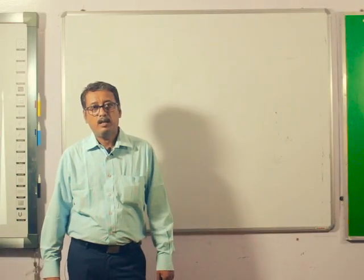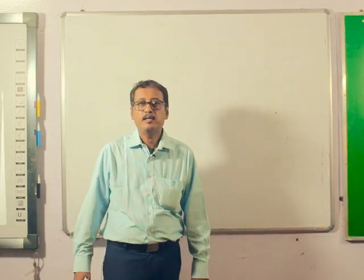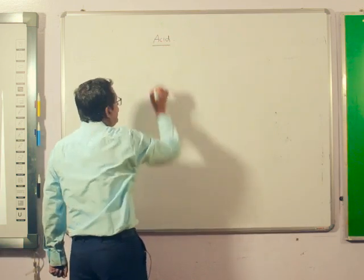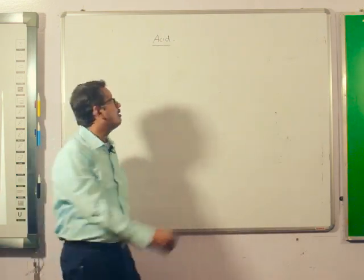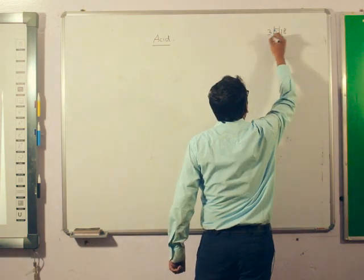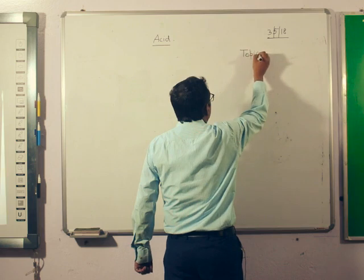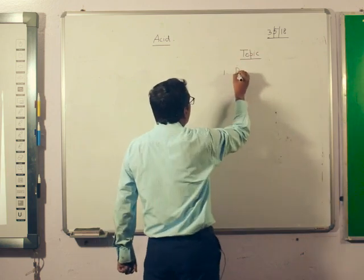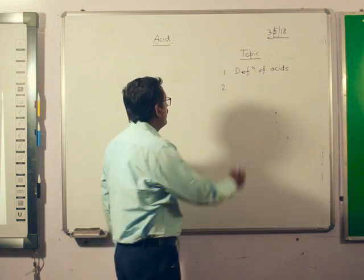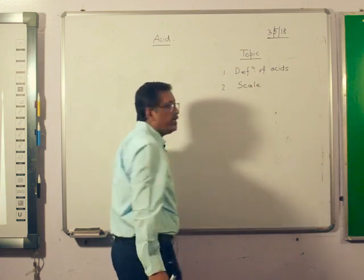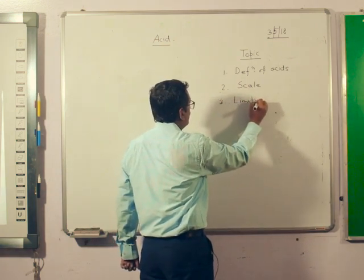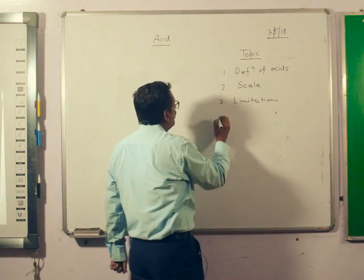Today I will describe a very easy chapter on chemistry - acids and bases. Mainly today I will describe acids. The topics I will cover are the definitions of acids, then the scale to determine the strength of acid, some limitations, and some examples.